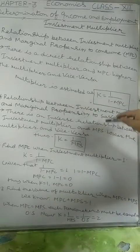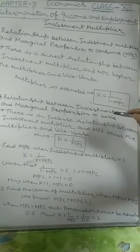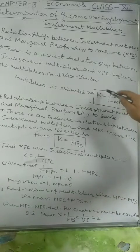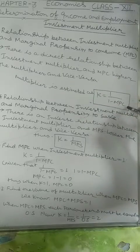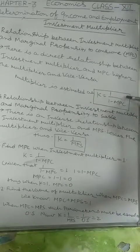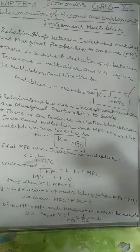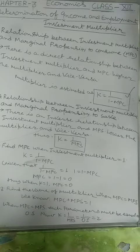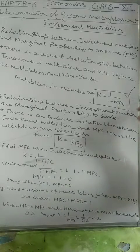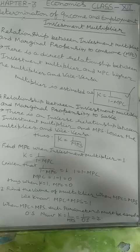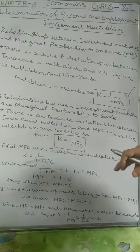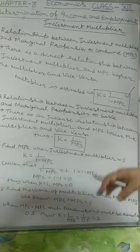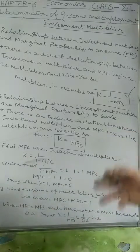The multiplier is estimated as: K is denoted for multiplier, and K equals 1 divided by (1 minus MPC). That is the relationship between investment multiplier and marginal propensity to consume — they are positively associated, because the value of the multiplier depends upon the marginal propensity to consume. In other words, the value of the multiplier depends directly upon the willingness of society to spend.